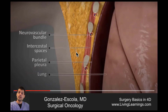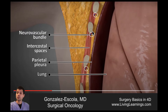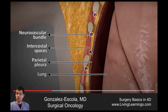Then you have to be aware of the anatomy, especially that the neurovascular bundle goes just inferior to each rib, over the superior aspect of the intercostal spaces.